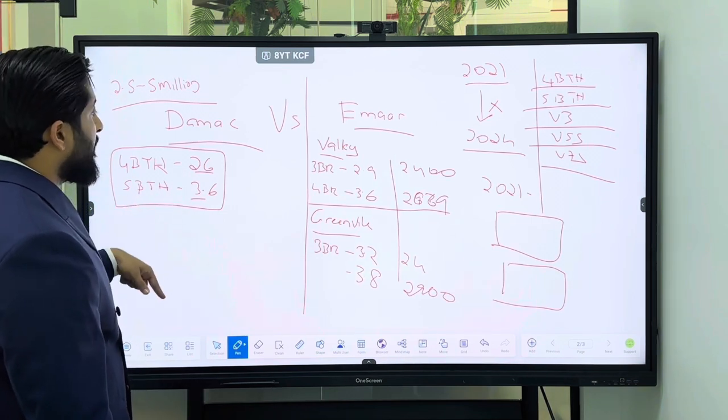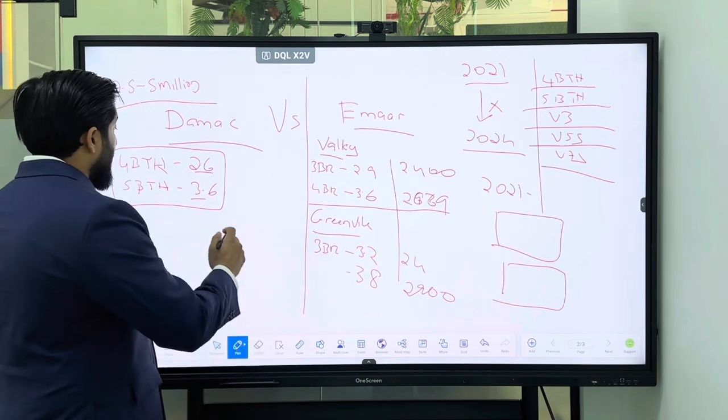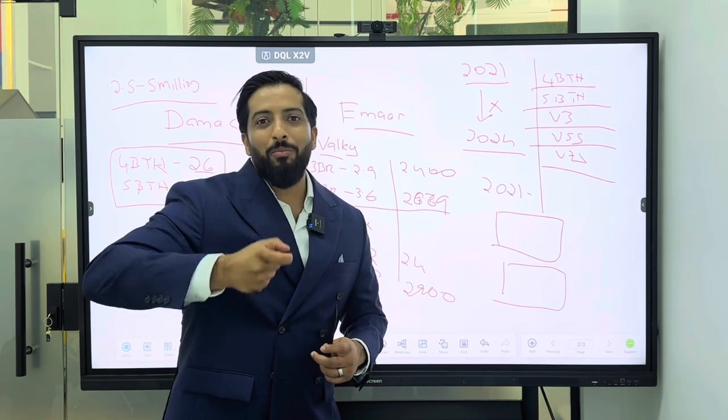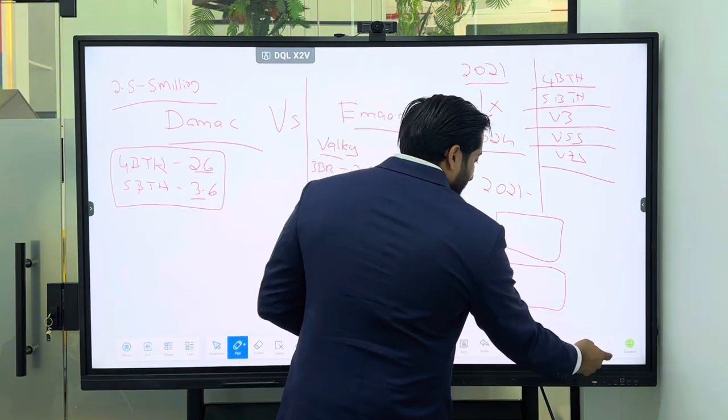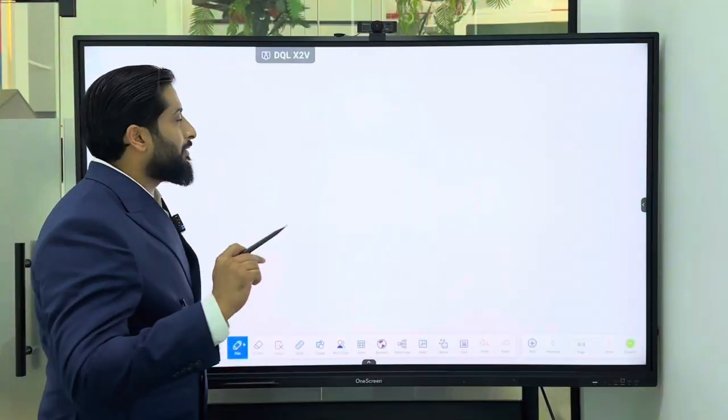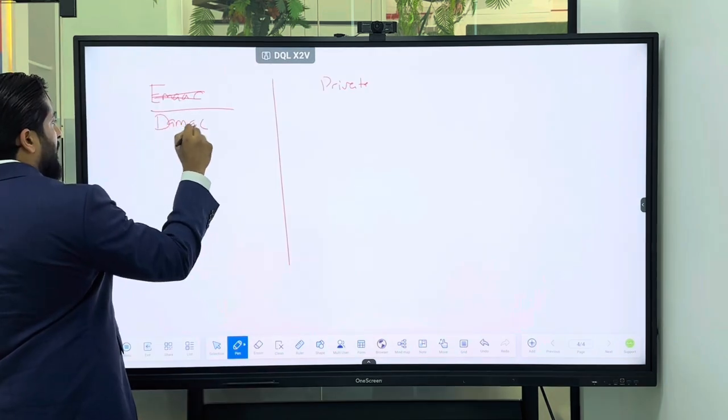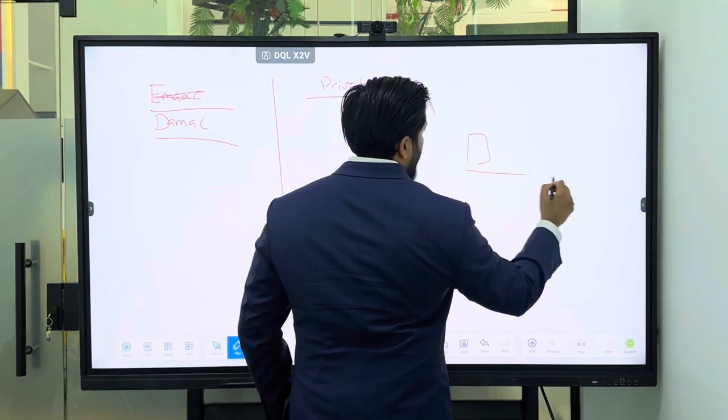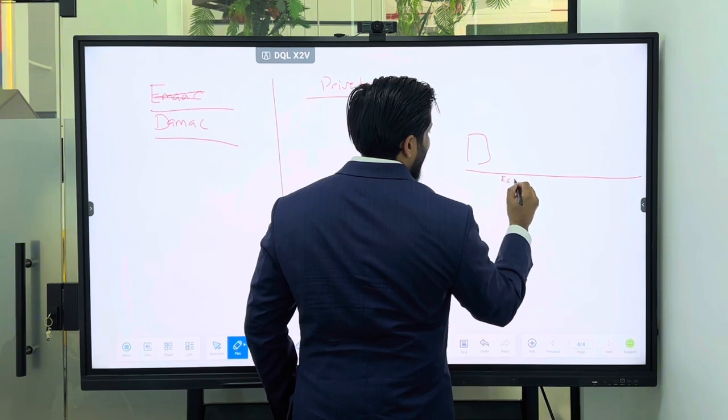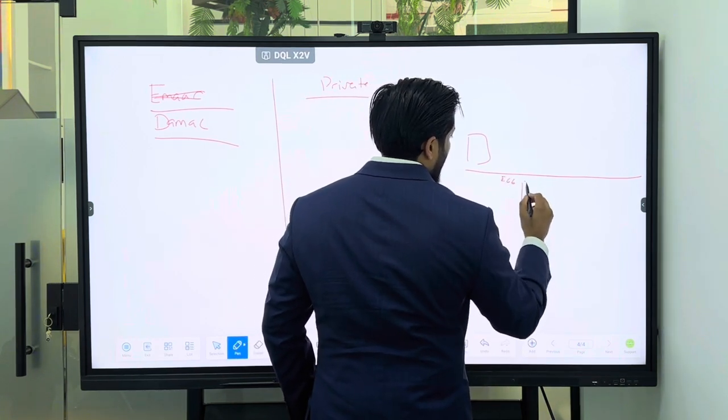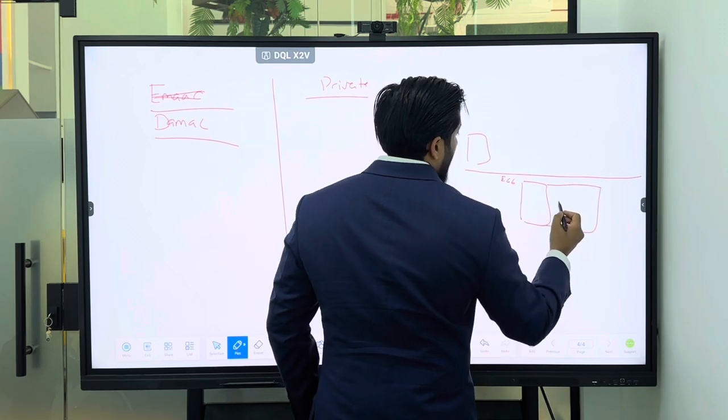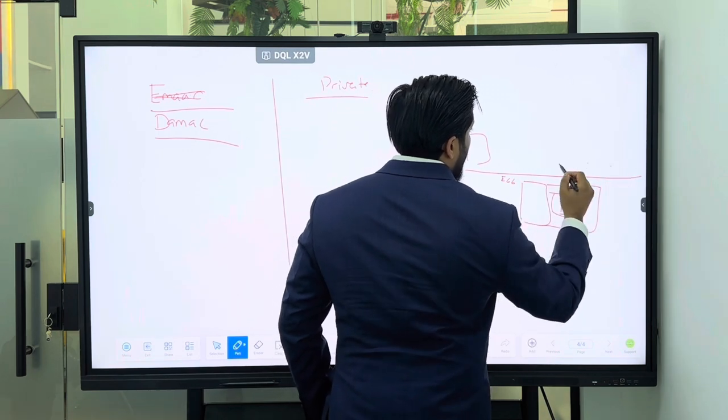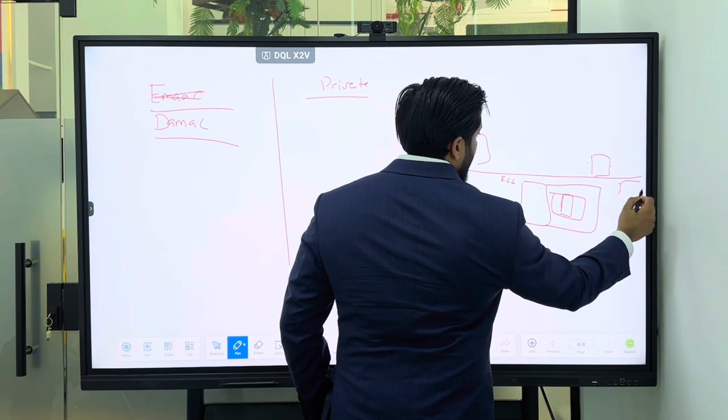Now going back to this - we've got Damak versus Emar. You see the price difference - a four-bed is at 2.6 and a five-bed is at 3.6. Why this is important - I want to complete one more explanation, in fact two more explanations. If I compare this with private developers versus Damak, I'm looking at another private developer. If you understand, this is Downtown. From Downtown there's a big road called Dubai Alain Road, E66.